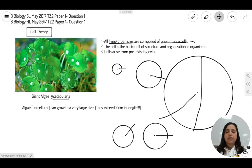So with that in hand, this is the reason why we have more cells in order to do a lot of functions. And this is where it gets us back to here, to the giant algae acetabularia. Why is this an exception to the cell theory? First of all, look at this.